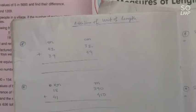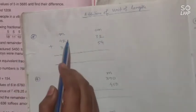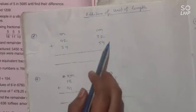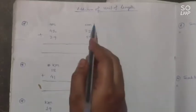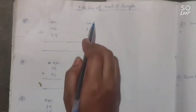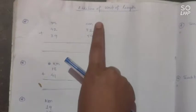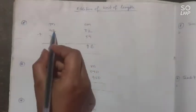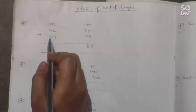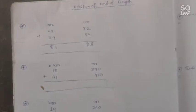First we will learn how to add meter and centimeter. Example: 42 meter 32 centimeter plus 39 meter 54 centimeter. Like addition of two-digit numbers, we start from the right side — the centimeter column. 2 plus 4 is 6, 3 plus 5 is 8, so 86 centimeter. Then 2 plus 9 is 11, carry 1. 4 plus 3 is 7, plus 1 is 8. Answer: 81 meter 86 centimeter.